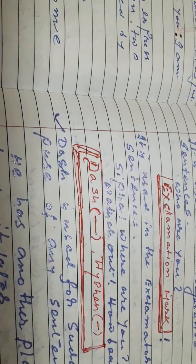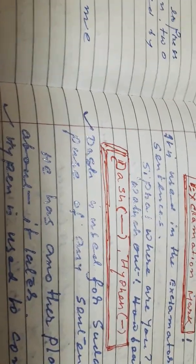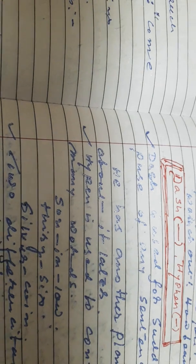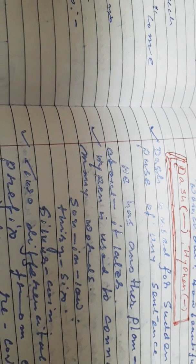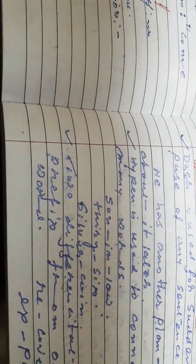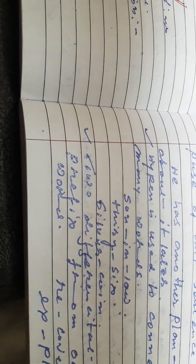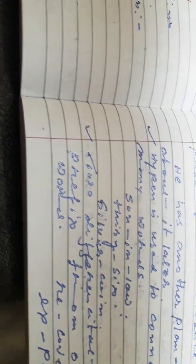An exclamation mark is used in exclamatory sentences. For example: 'Alas! He was undone.' A dash is used to indicate a pause or break in a sentence — for example: 'He has another plan — but about it later.' A hyphen is used to connect two words, such as 'son-in-law' or similar compound words.